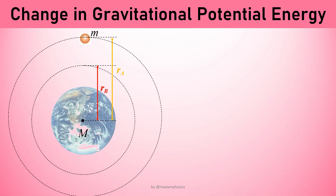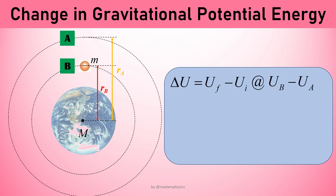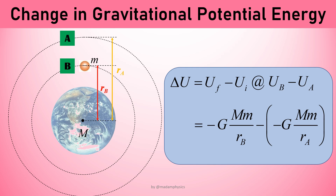If you want to calculate how much work is done to bring a mass from point A to point B, the amount of work done is equivalent to the change in potential energy, which is the difference between the final and initial U. We replace each term with the formula for U and label r accordingly, where B is the final position and A is the initial position. Don't forget to include the negative sign of U in the formula.